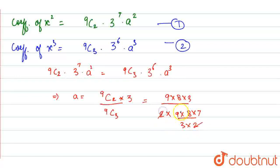So 2 will get cancelled, here 9 is cancelled, 8 is cancelled. Now the answer is: it will be 9 upon 7. So the value of a is 9 upon 7. Thank you.